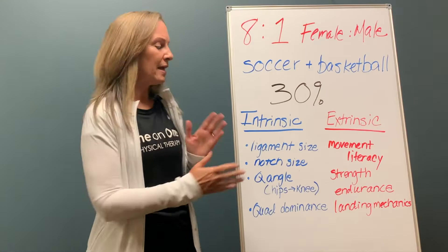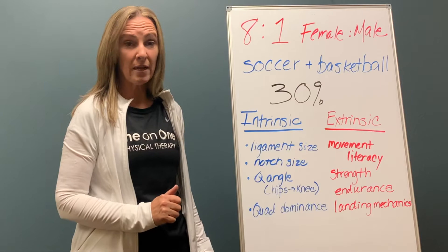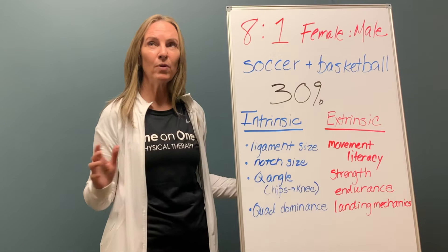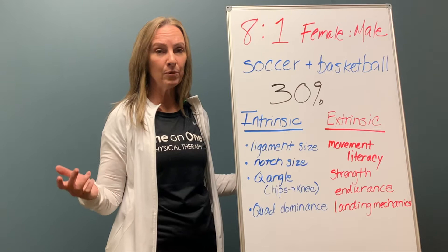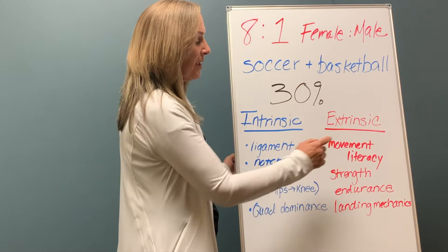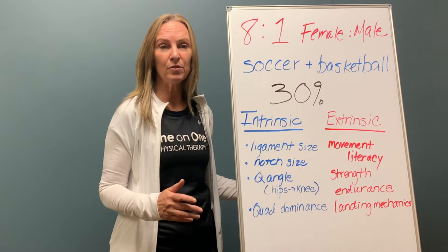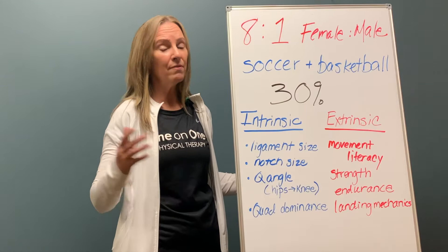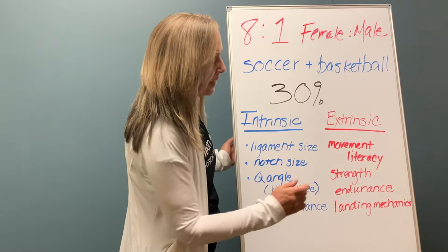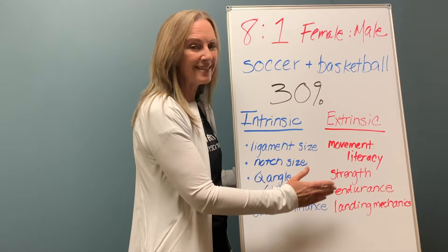Extrinsic factors are things we can control. These include movement literacy — coordination and motor control, how well an athlete moves. Strength can be developed early and built upon. Endurance is critical, as most injuries occur in the second half of the game, the fourth quarter, or the end of practice. Landing mechanics is another major factor we can change starting at a very early age.